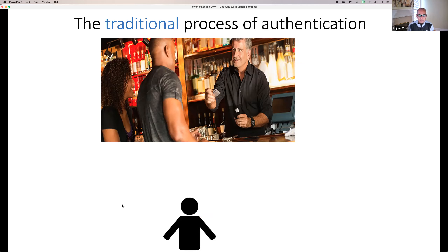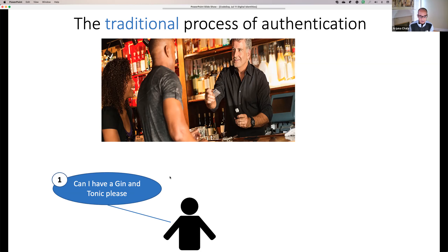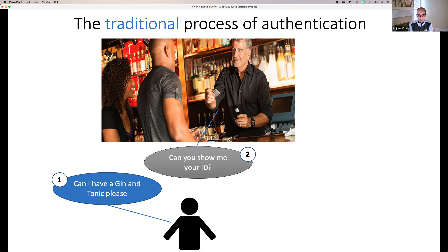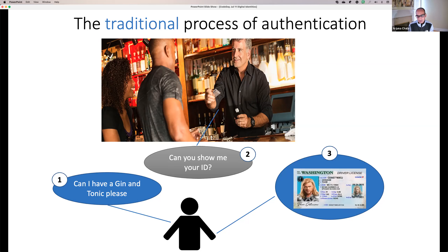Let's step back and understand some authentication processes in the traditional world — not online — and compare them to what happens online. In the traditional world, let's say you visit a bar and want to order a drink. The bartender asks to see your ID. He checks your date of birth and the picture on the driver's license to make sure he's talking to the same person and that you're over the age of 21.